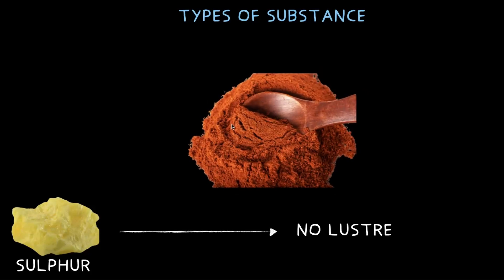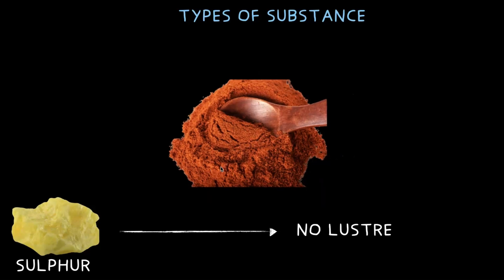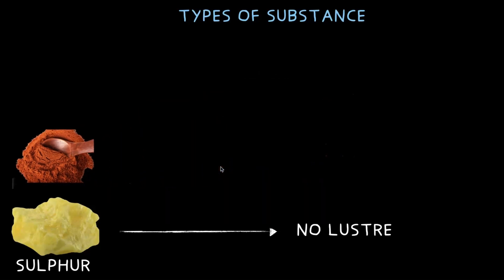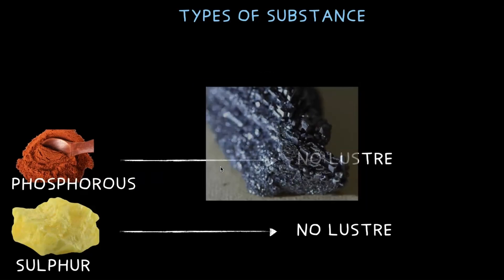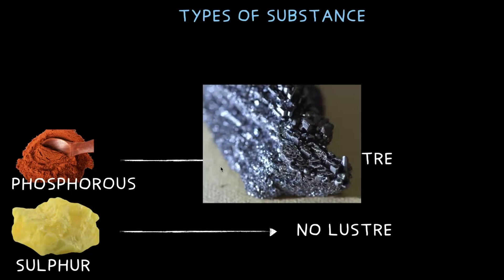Next up is phosphorus. It's in powder format here, but even in crumb or solid format it's still not shiny at all. It doesn't reflect light the way a metal would — no sparkle, nothing. So again, phosphorus has no luster.